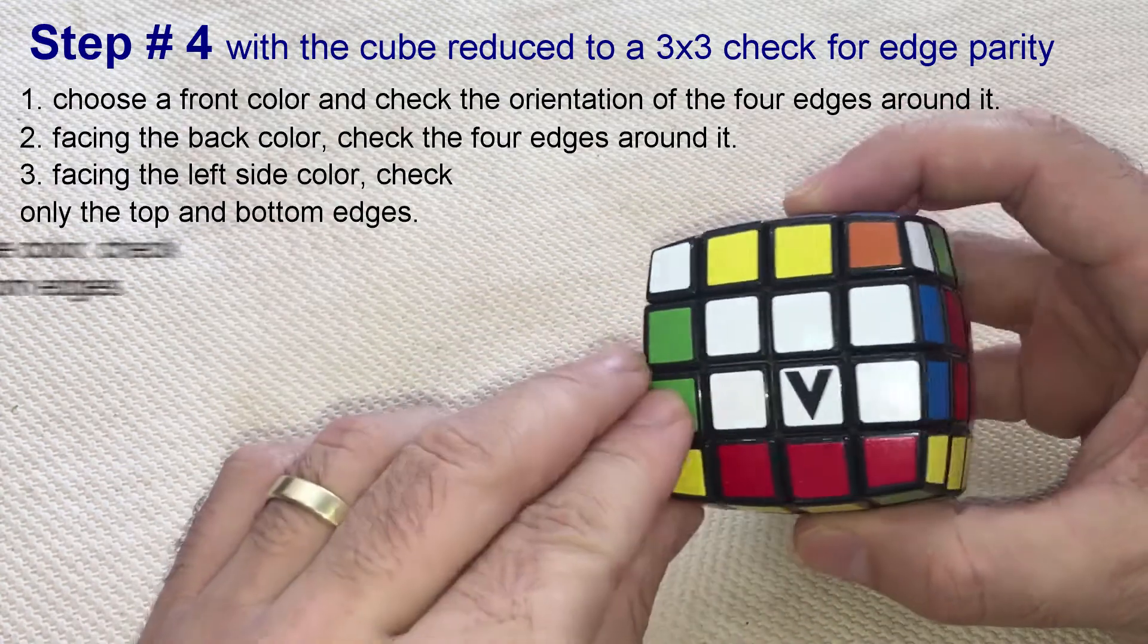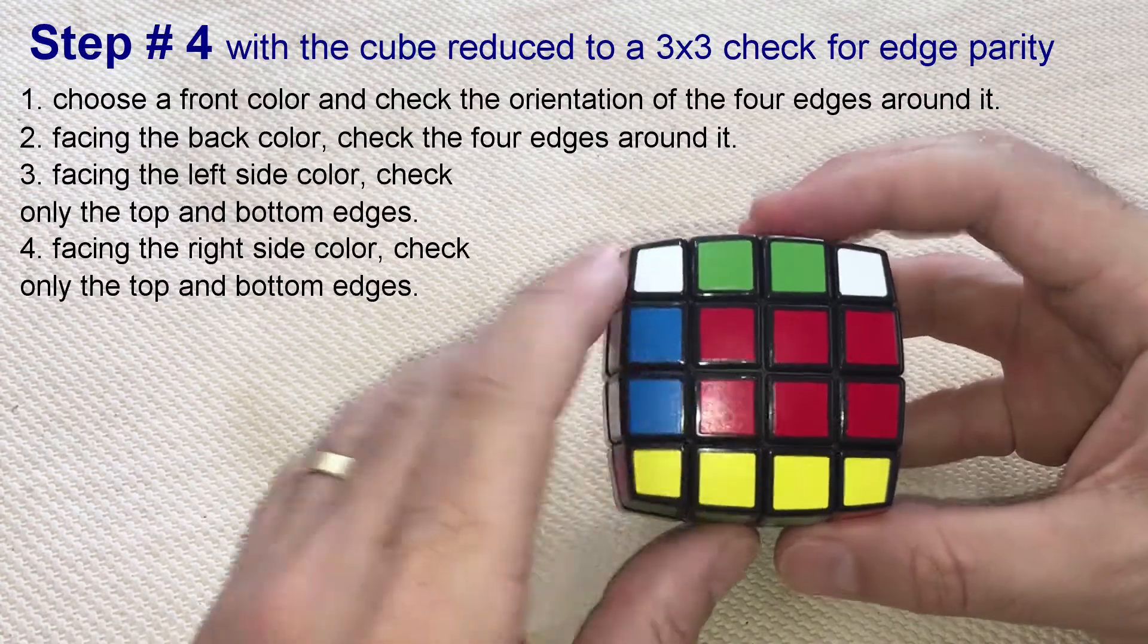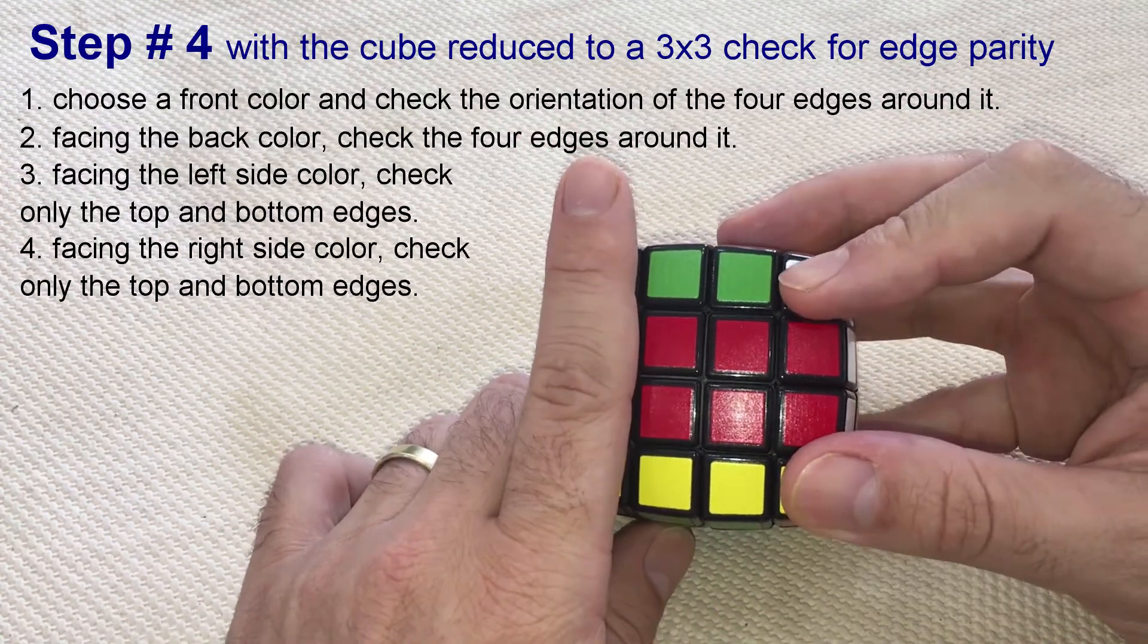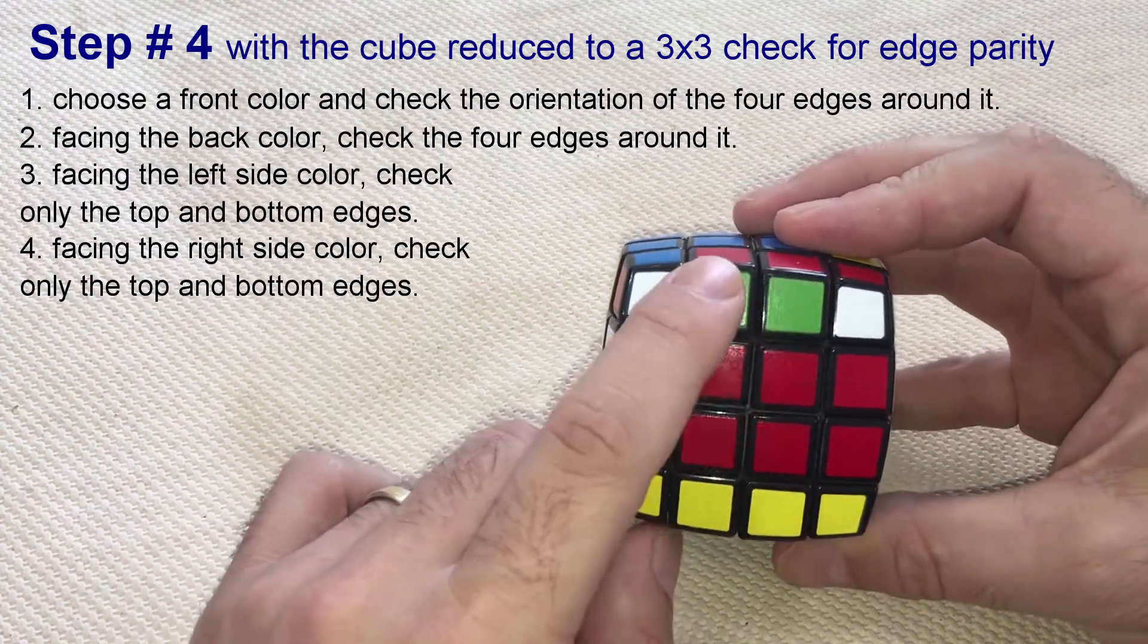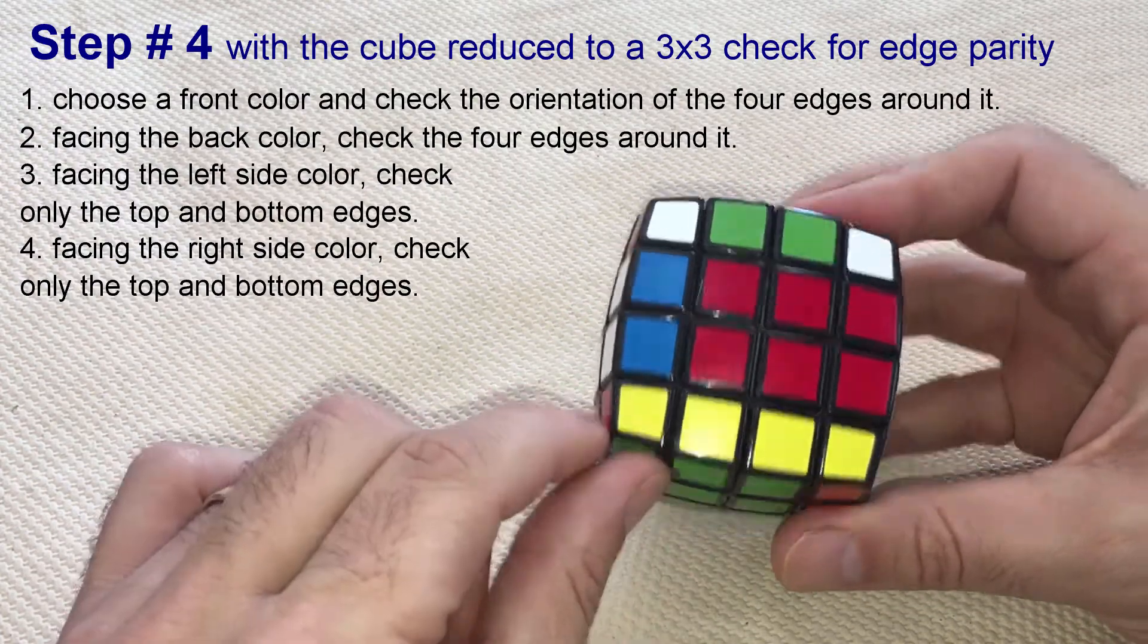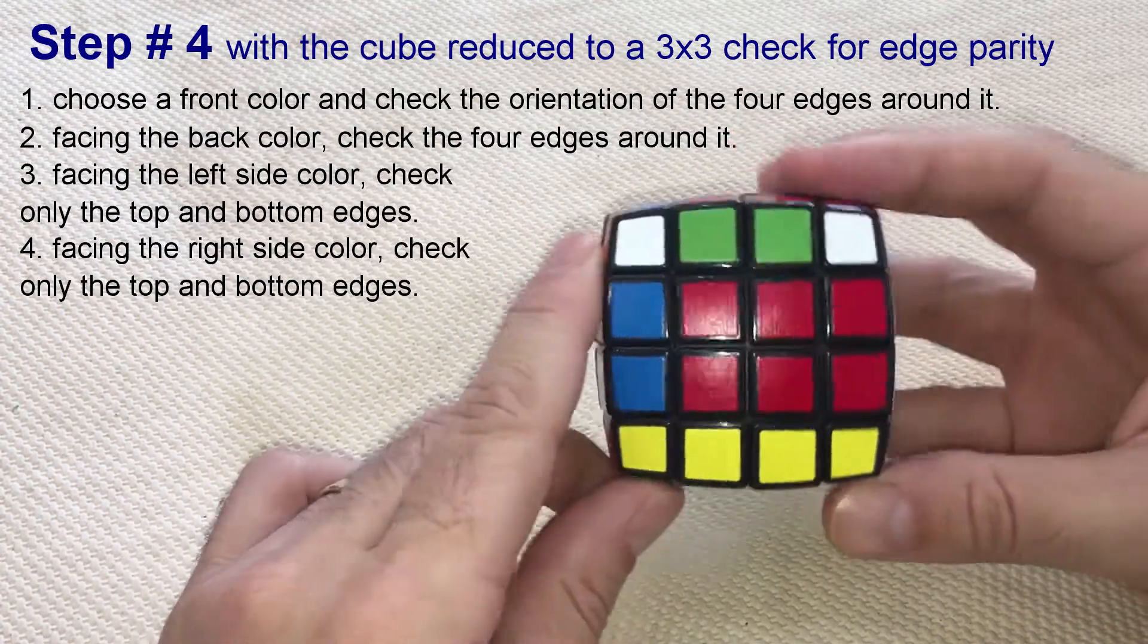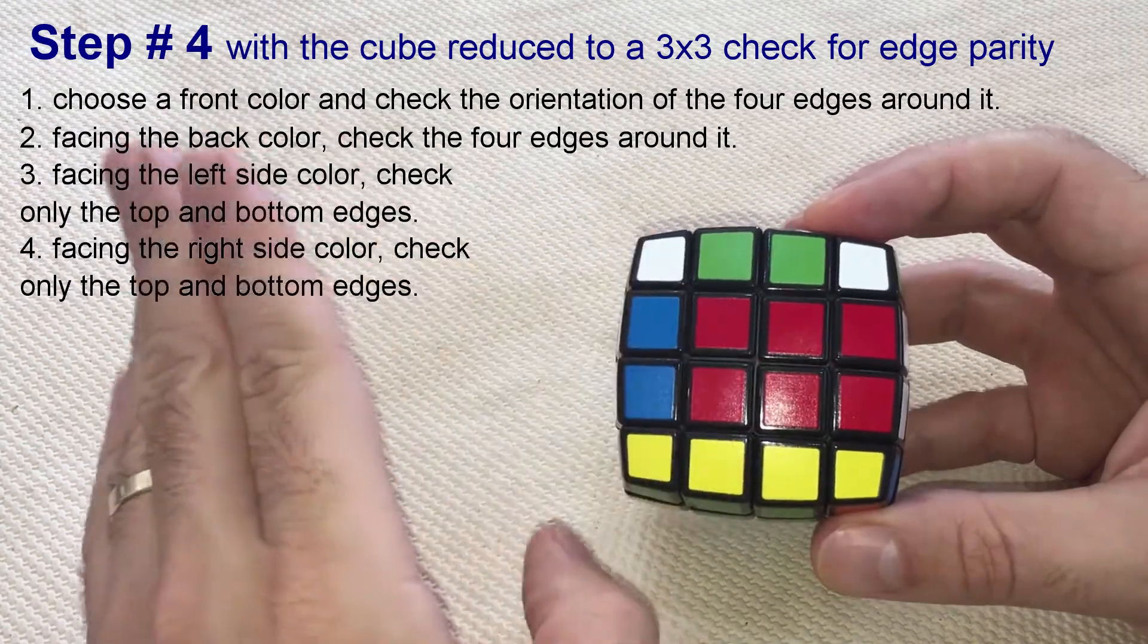And finally, the other side face. Now, with the red center facing you, let's again count only the top and bottom edges. Count as good edges the ones with orange or red facing you, and the ones with white or yellow facing aside. And there are none.